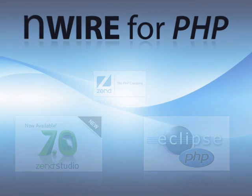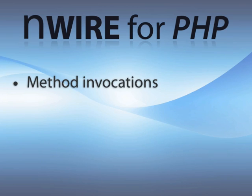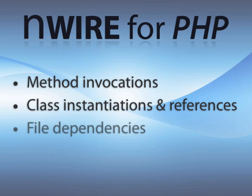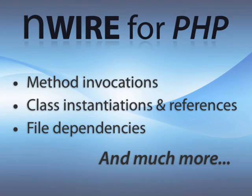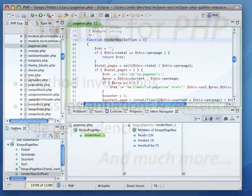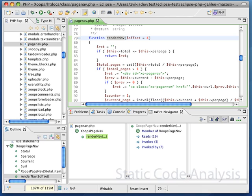With EnWire, answers to questions like where this method is being invoked, where this class is instantiated, or where this file is being used, are just a click away. Following a simple installation, EnWire analyzes your code and it is now ready to assist in exploring your application.